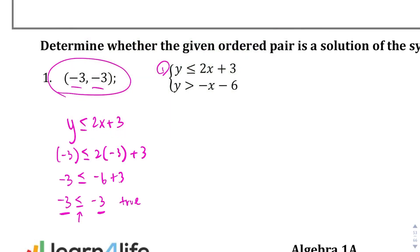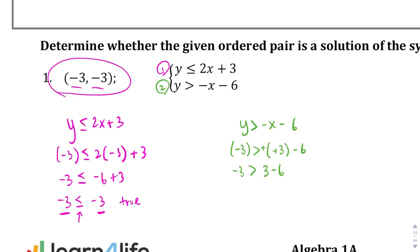Now let's try the same thing with the second inequality: y greater than negative x minus 6. Plugging in negative 3 for y and negative 3 for x, we get negative 3 greater than 3 minus 6, which is negative 3. Since there's no line underneath — meaning it's strictly greater than — negative 3 is not greater than negative 3. This is a false statement.